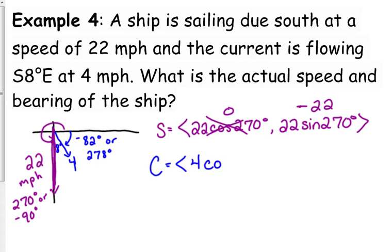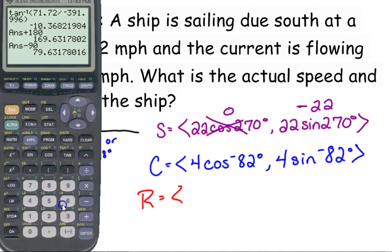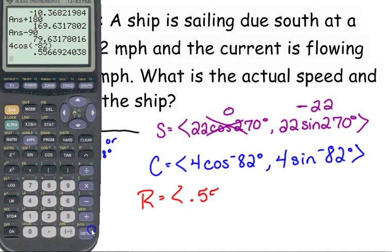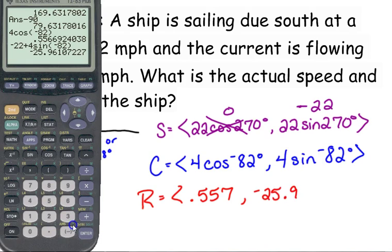The current, magnitude of four, cosine of, let's go with the negative just for kicks, negative 82. So that means that our resultant, the x-component is simply the current, four cosine of negative 82. 0.557, very small, makes sense. Not a very heavy current and it's only 8 degrees so it doesn't make a huge difference there. Negative 22 plus 4 sine of negative 82, because we said the y-component of the ship was negative 22. So the y-component is negative 25.961.